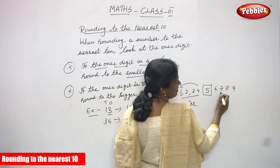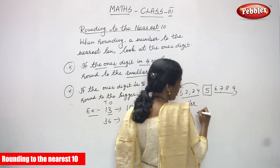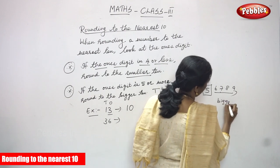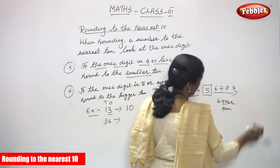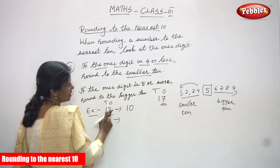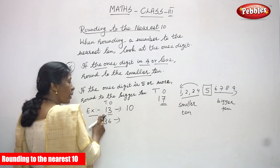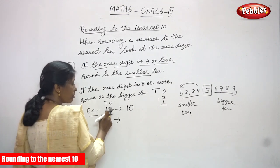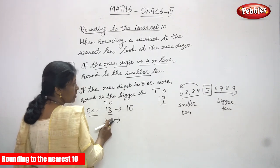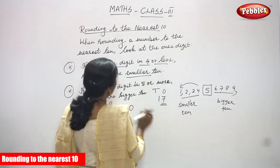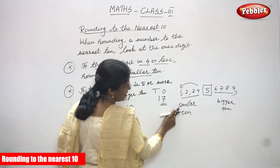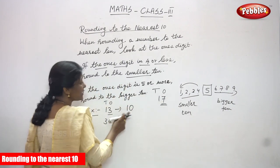If the ones digit is 5 or more — 5, 6, 7, 8 — that means you have to round the digit to the bigger 10. Now look at 13 again. You have to focus only on the ones digit. The ones digit is 3. That is the 4-or-less concept, so round to the smaller 10 — write 10.